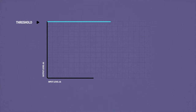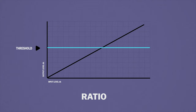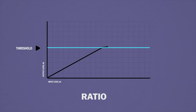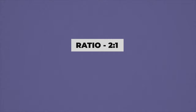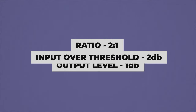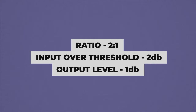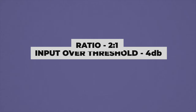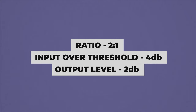The ratio control is used to choose how much compression will be added to the sound once it goes beyond the threshold. This is always represented by a ratio — for example, 2 to 1. The larger the first number, the more compression will be added. For example, if you have a ratio of 2 to 1 and the signal goes over the threshold by 2 dB, only 1 dB of that signal will be allowed to pass through. If it goes over by 4 dB, then 2 dB will be allowed to pass through, and so on. The louder parts of the signal will now be quieter.